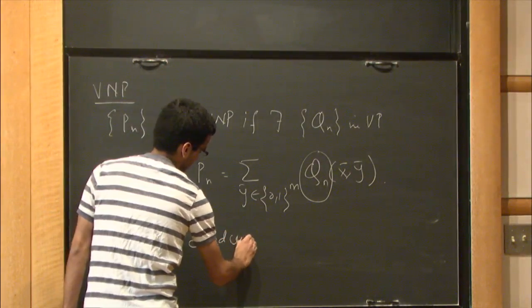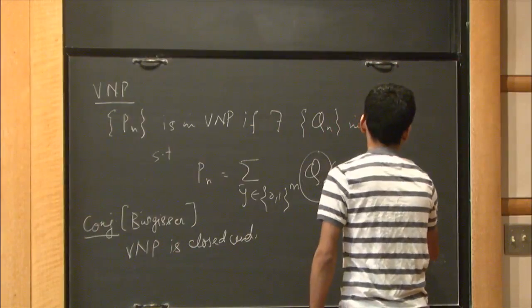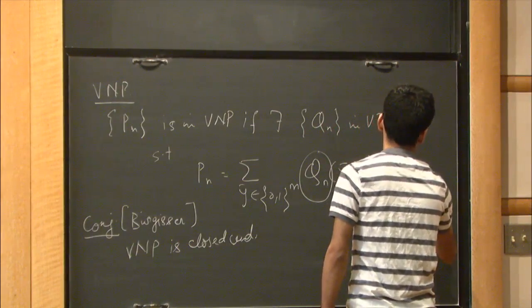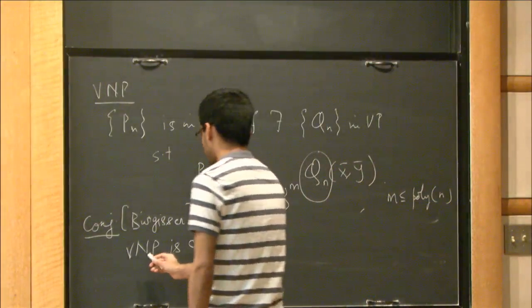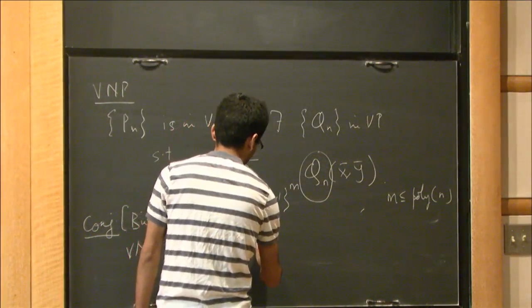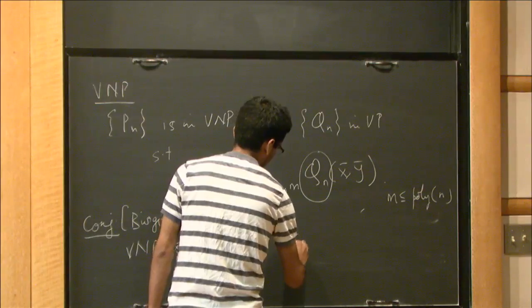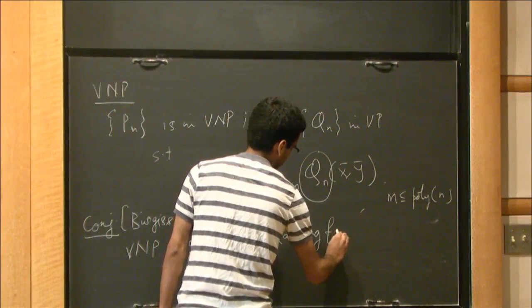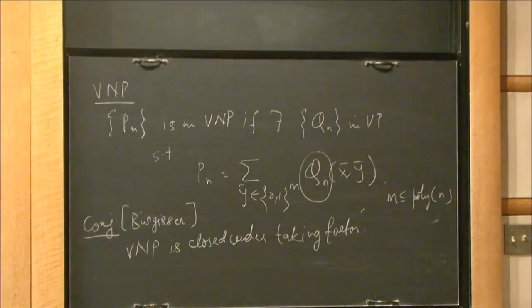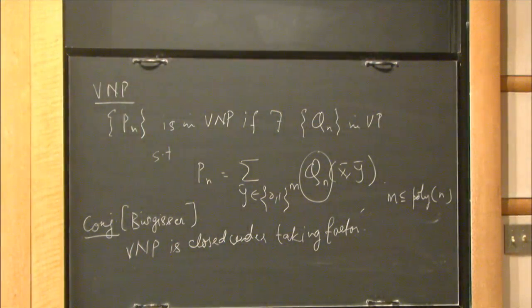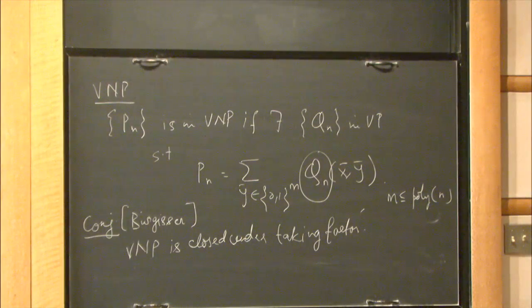M should be bounded by poly N. So VNP is closed under taking factors. This conjecture was from around 2001. These are some instances of this question.